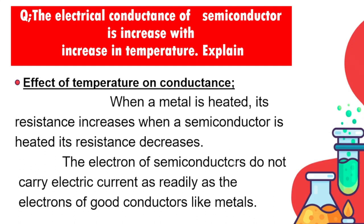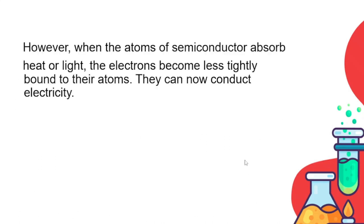The electrons of the semiconductor do not carry electric current as readily as electrons of a good conductor like metals. However, when atoms of the semiconductor absorb heat or light, the electrons become less tightly bound to their atoms and now they can conduct electricity.